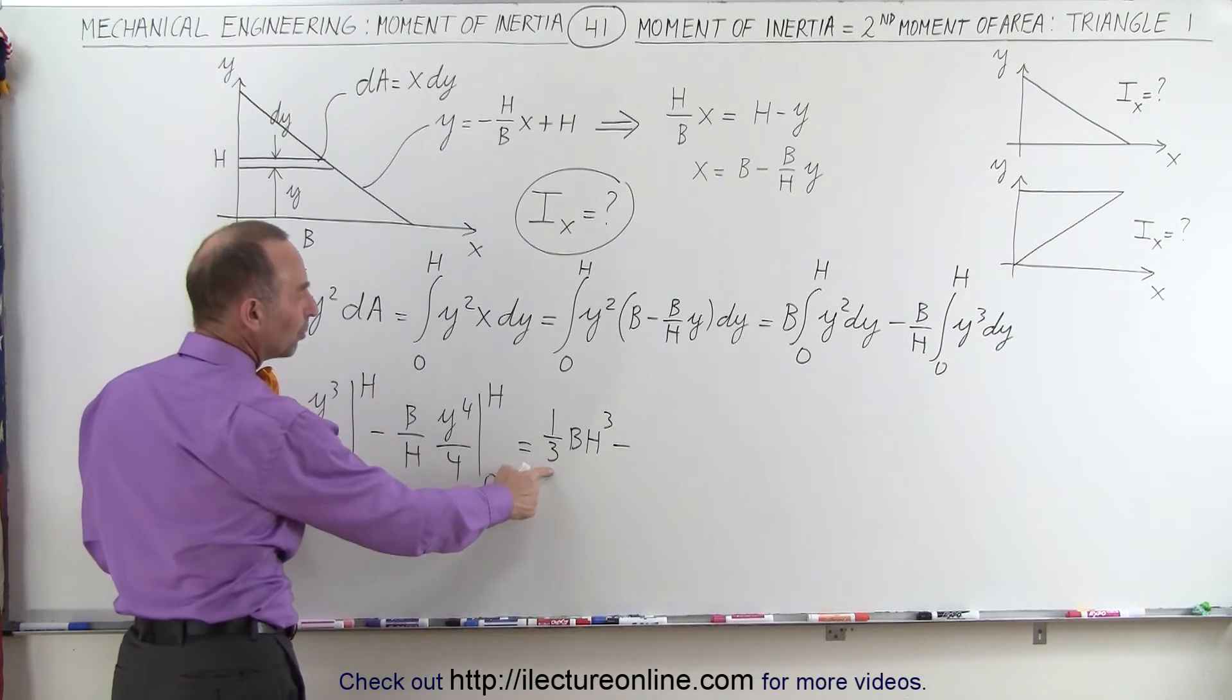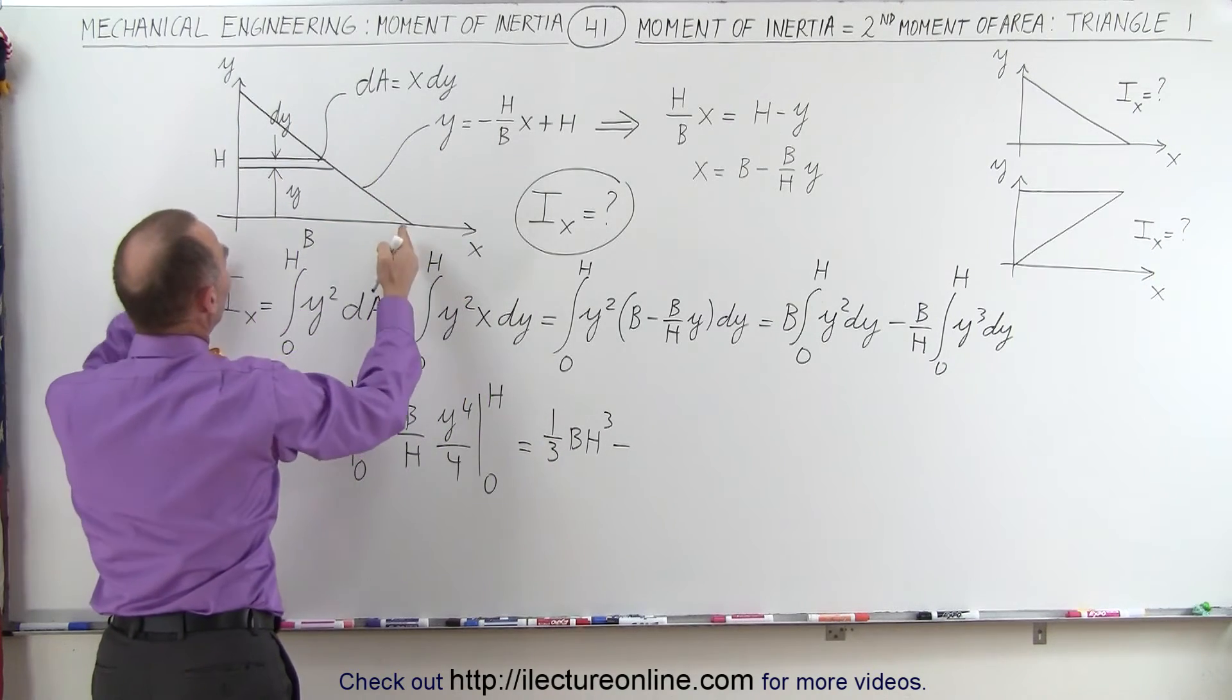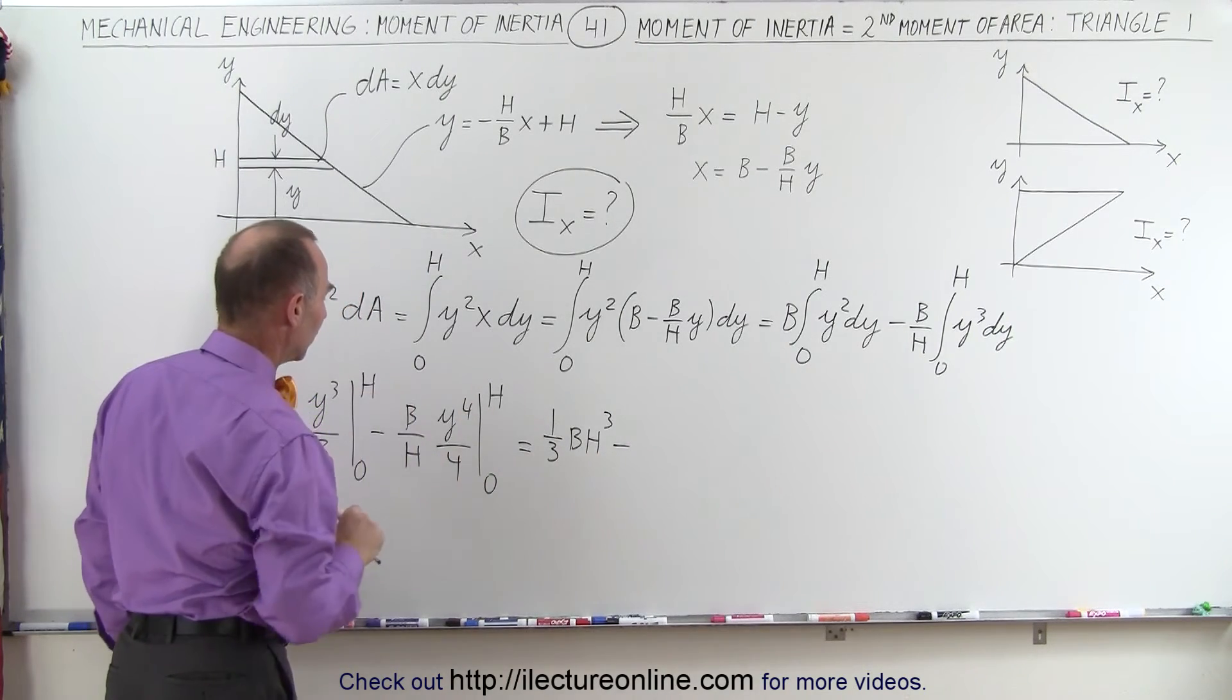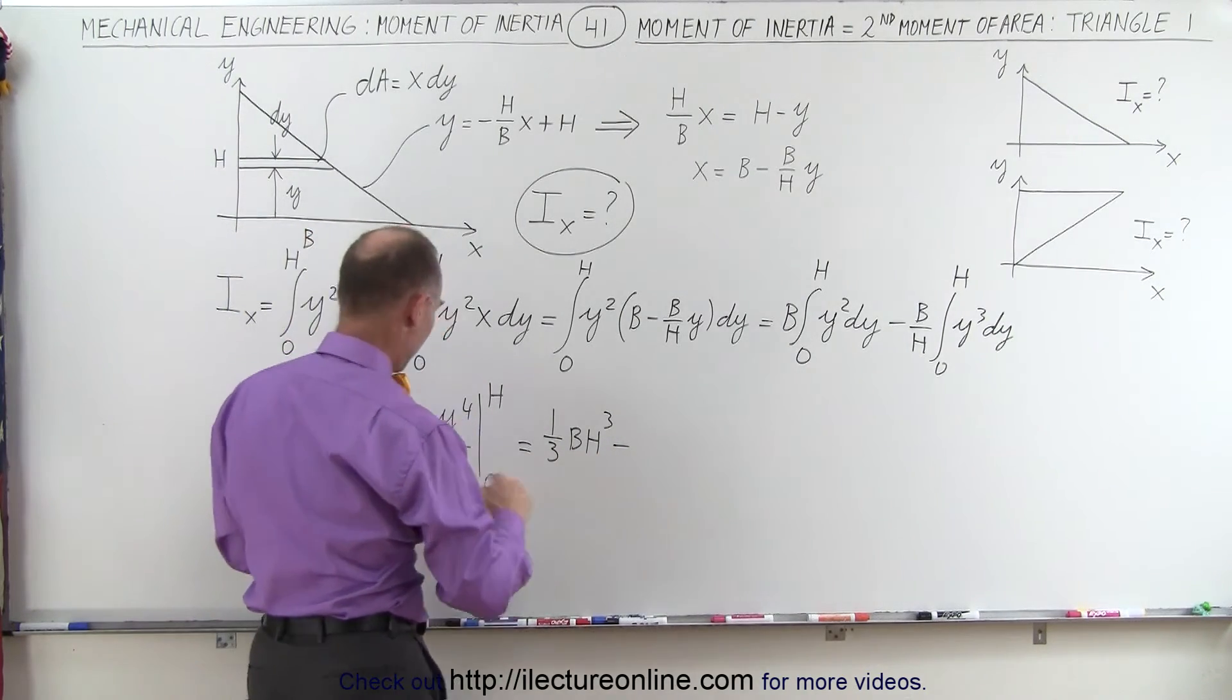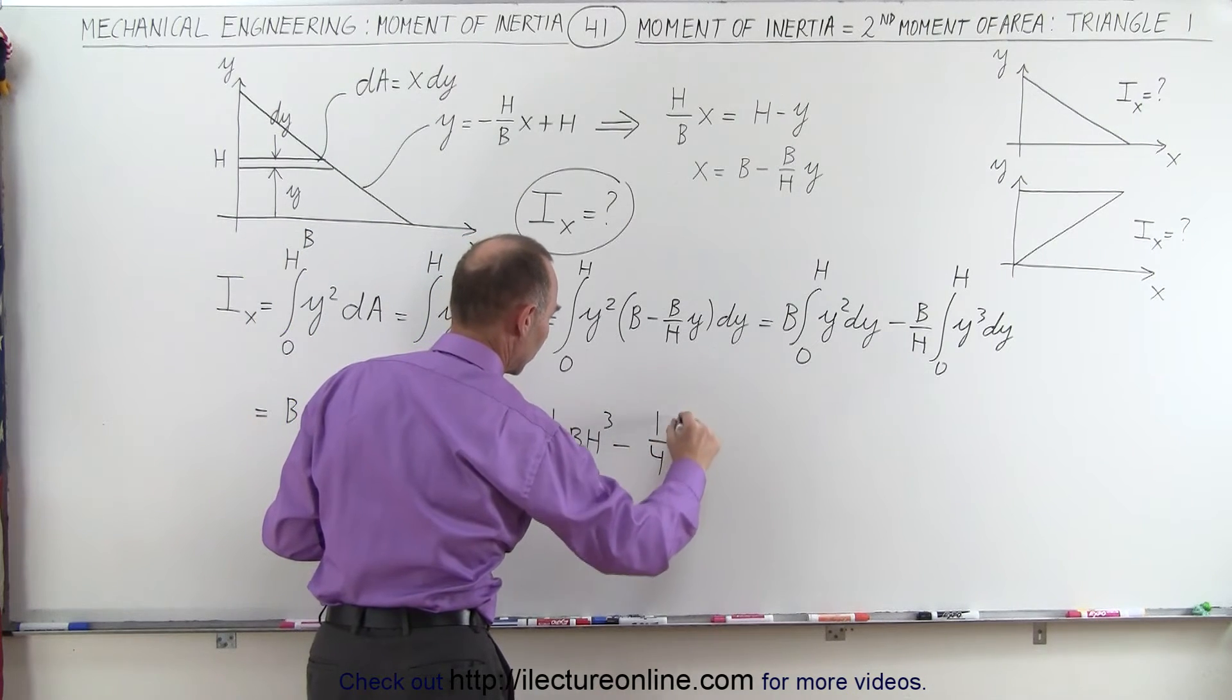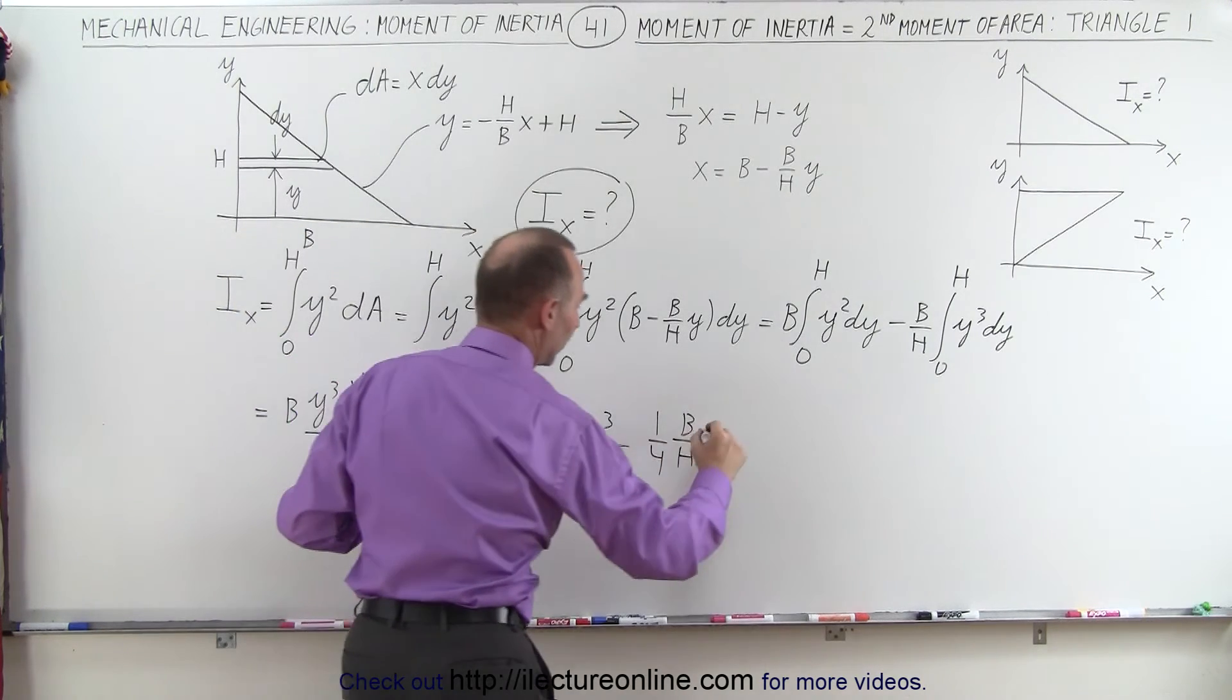minus, and notice that actually would be the moment of inertia if this had simply been a rectangle of width b and height h. So we subtract from that this quantity right here, which is 1 4th b over h, times h to the 4th power.